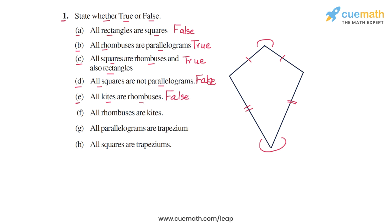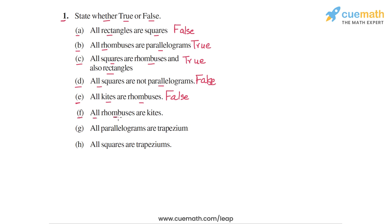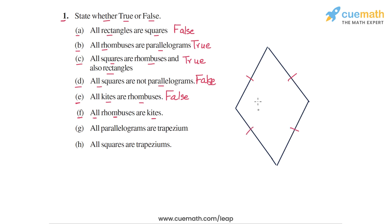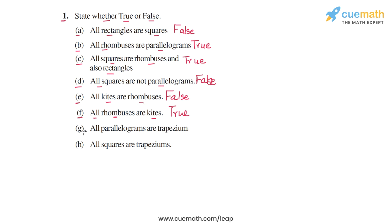Statement F says: all rhombuses are kites. A rhombus is a parallelogram in which all four sides are equal. A rhombus satisfies all the conditions of being a kite — one pair of adjacent sides equal and the other pair also equal. So a rhombus is a special case of a kite in which all four sides happen to be equal. Statement F is true.